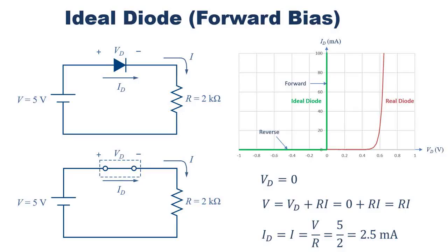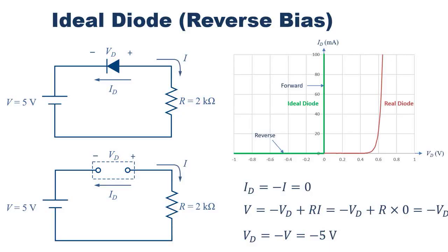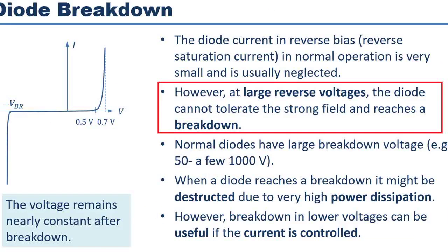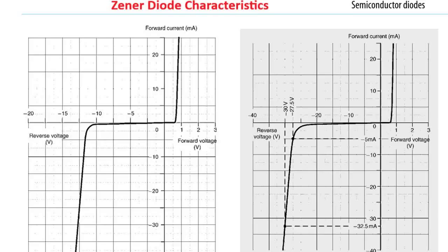The working principle of a normal diode is: when forward biased, after about 0.7 volts, current flows easily. In reverse, it blocks current until breakdown, which usually damages it. In contrast, the working principle of a zener diode is: when forward biased, it behaves just like a normal diode. But in reverse, once the voltage reaches the zener value, it allows current safely. This keeps the voltage stable across the load.